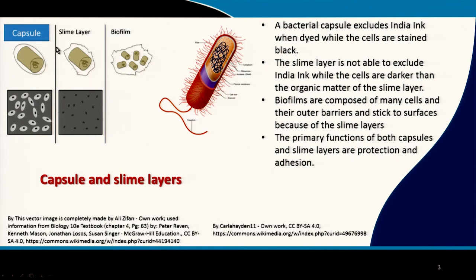Cells are often found with what is called a slime layer. This slime layer, when it is dyed, is not going to be excluding India ink entirely. You can see that the cells will pick up most of the ink or the dye, and the organic matrix which is the slime layer will be dark in comparison to the background but has less of the dye compared to the cells, as shown in this schematic.